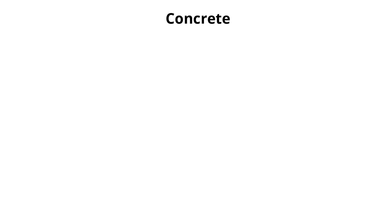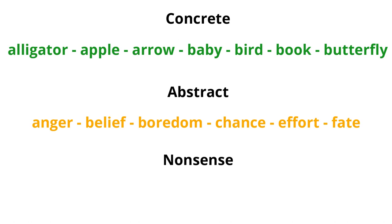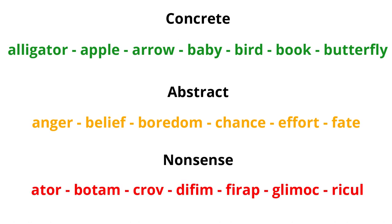Here are three lists of words: concrete words, abstract words, and nonsense words. See which list is easier to memorize. The concrete words have a high level of concreteness. The abstract words have a lower level of concreteness. And the nonsense words have a very low level of concreteness.